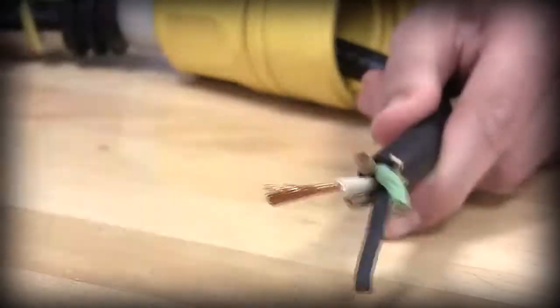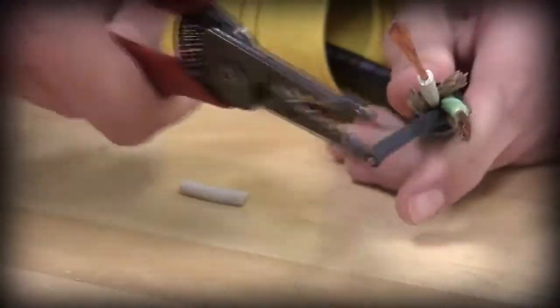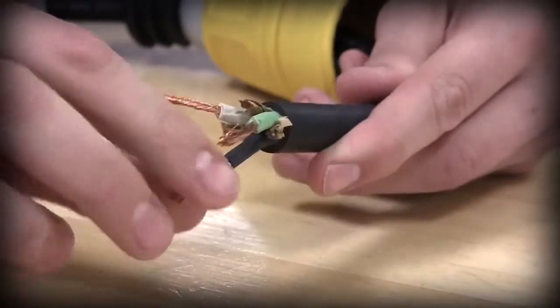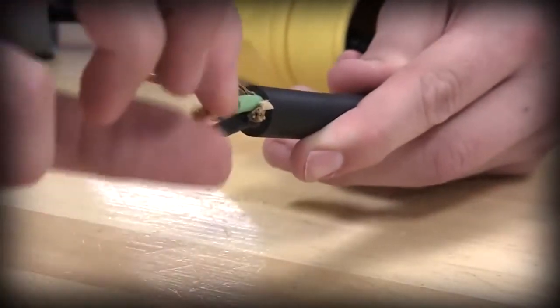Strip all the conductors half an inch. Twist the leads to eliminate frayed ends. Do not tin the conductors.